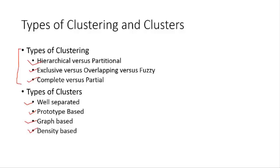Finally, density-based clustering defines a cluster as a dense region of objects surrounded by regions of lower density. This is useful when clusters are not well-defined, the data has lots of noise, clusters are irregular or intertwined, and there are many outliers. The idea is to identify spots of extreme density — once identified, that dense region becomes a cluster. This approach is well-suited for noisy data.